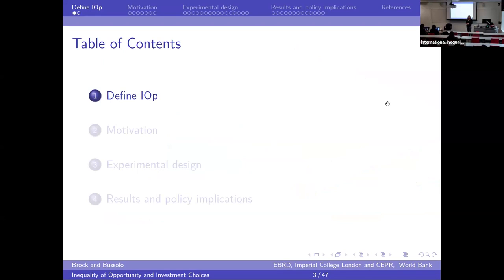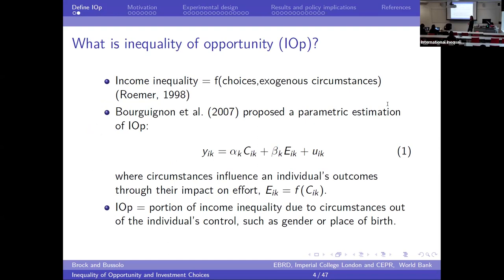For a typical outline: for the uninitiated, I will define IOP — inequality of opportunity. For the initiated, it's going to be a fairly cursory definition. Then we'll move into motivation and experimental design. This is a laboratory experiment, and then we'll talk about the results.